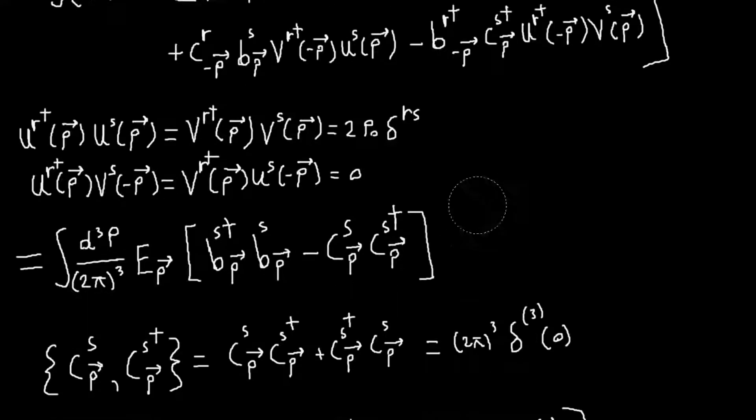And so there what we did is we used the commutation relation for our creation and annihilation operators to move c dagger to the left. And then we also got a delta of zero that we just threw away.